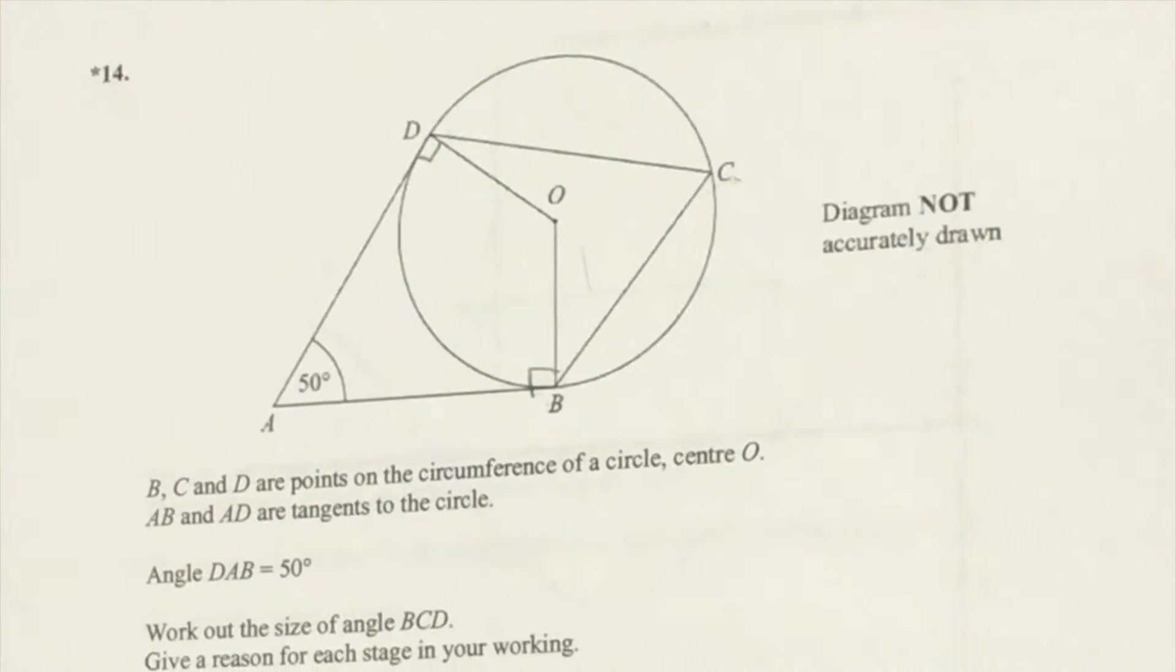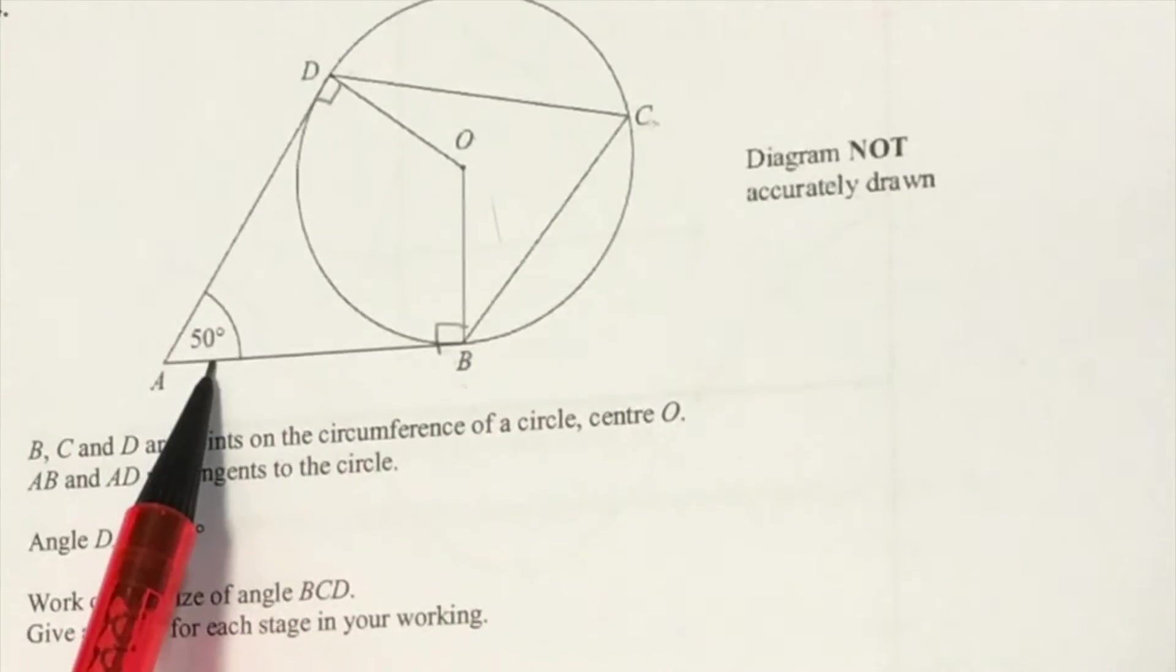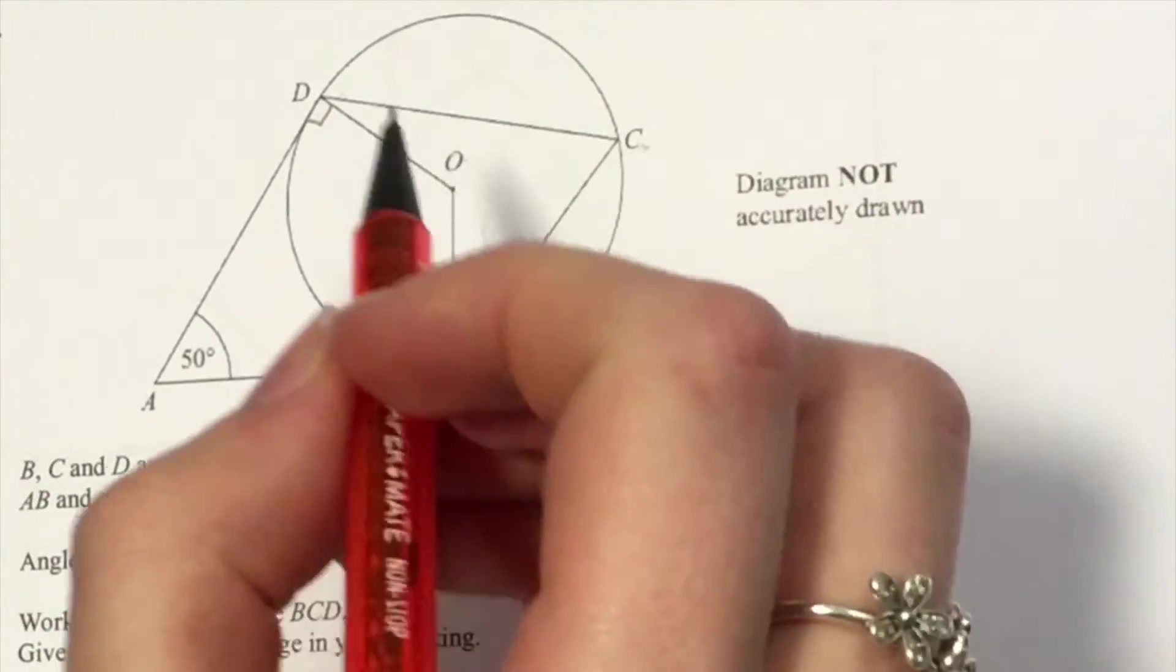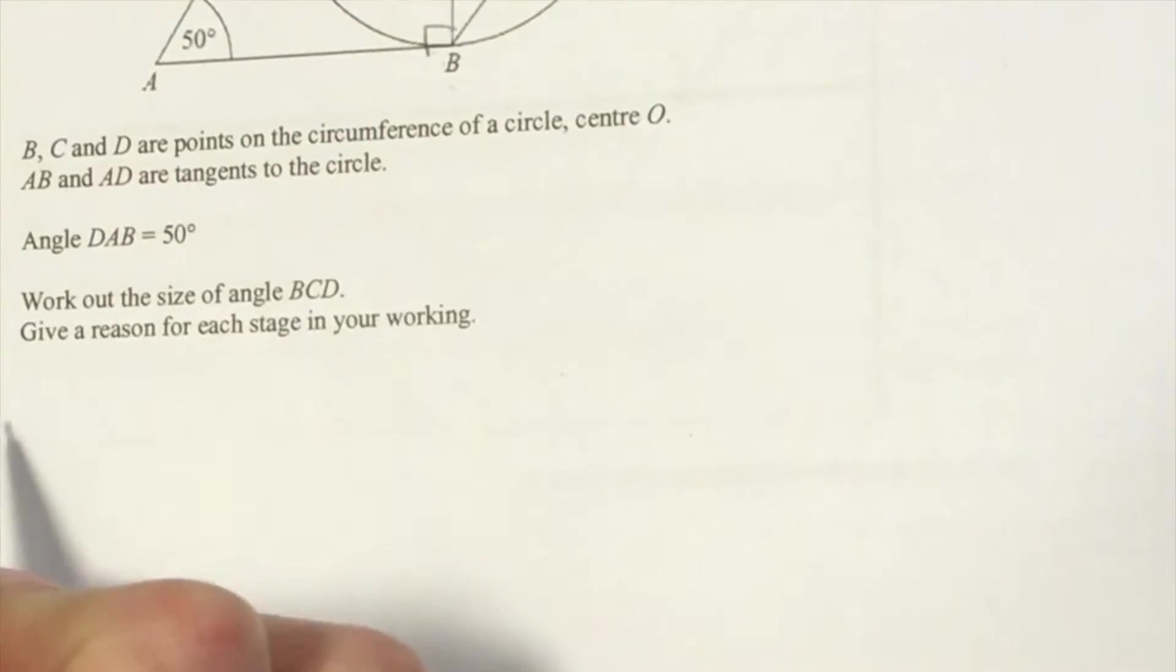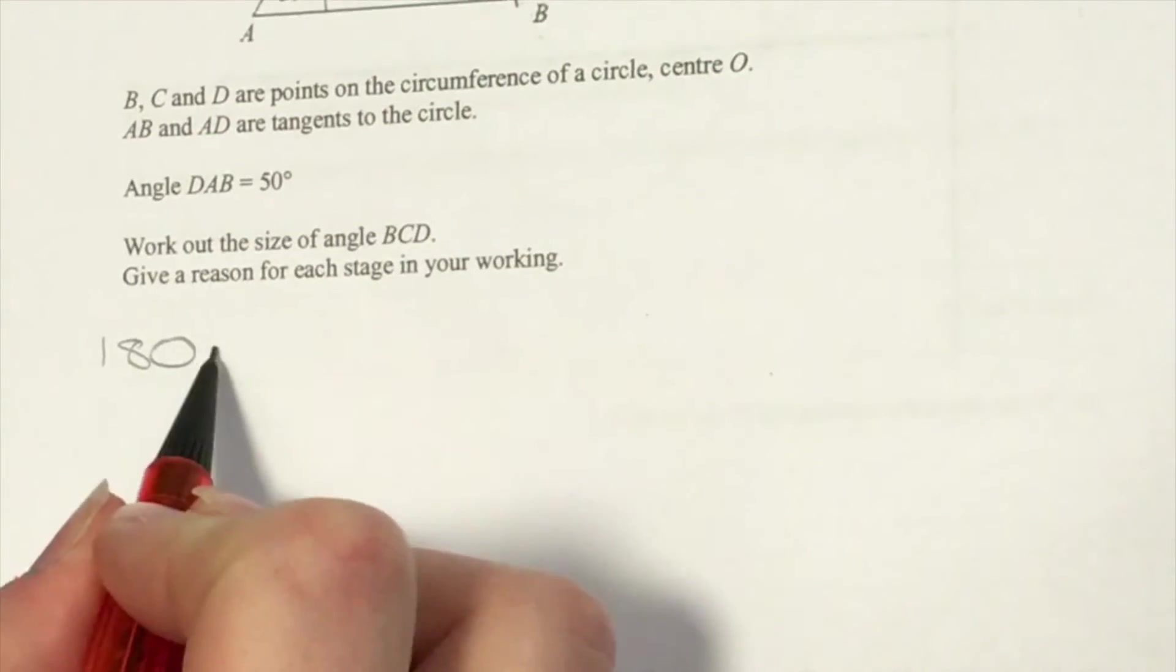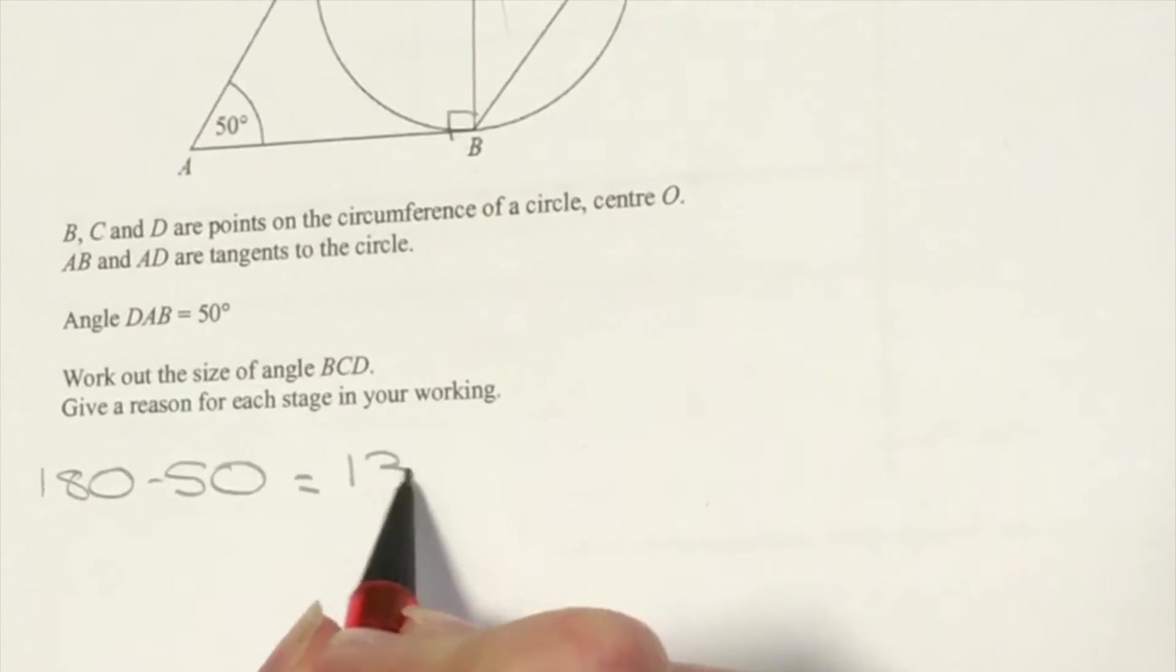Since these angles add up to 180, angles O and A also have to add up to 180. So you'd have to do 180 minus 50, which equals 130.